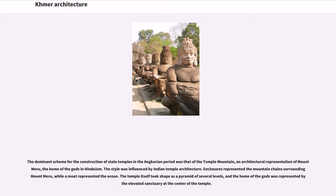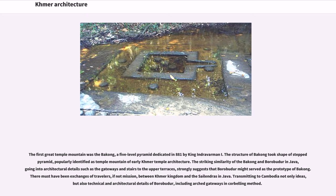The dominant scheme for state temples in the Angkorian period was that of the Temple Mountain, an architectural representation of Mount Meru, the home of the gods in Hinduism. The style was influenced by Indian temple architecture. Enclosures represented the mountain chains surrounding Mount Meru, while a moat represented the ocean. The temple itself took shape as a pyramid of several levels, with the elevated sanctuary at the center representing the home of the gods. The first great temple mountain was the Bakong, a five-level pyramid dedicated in 881 by King Indravarman I, its stepped pyramid popularly identified as the Temple Mountain of early Khmer architecture.